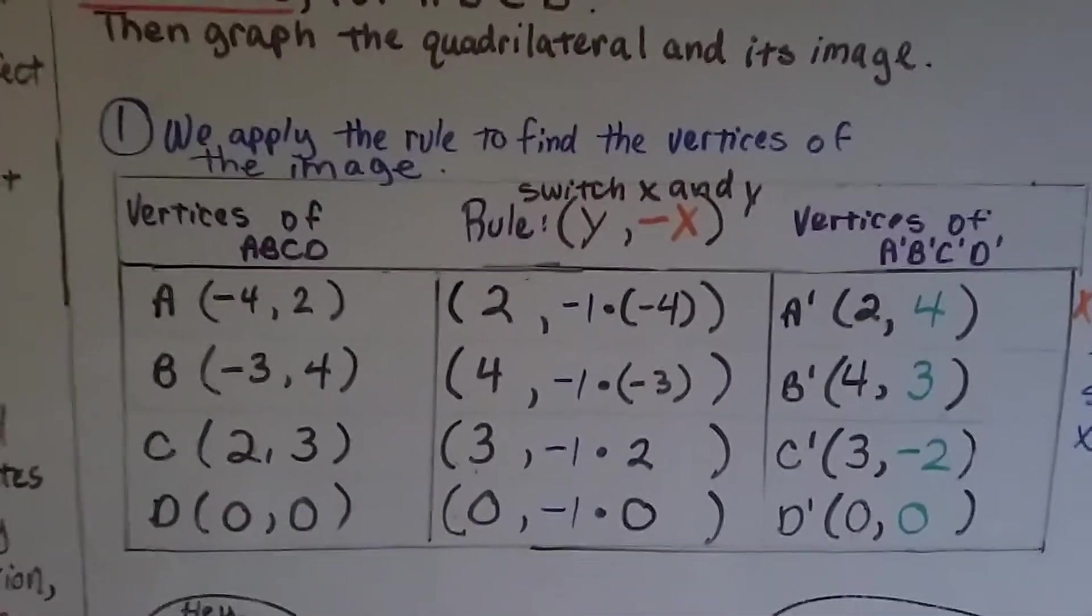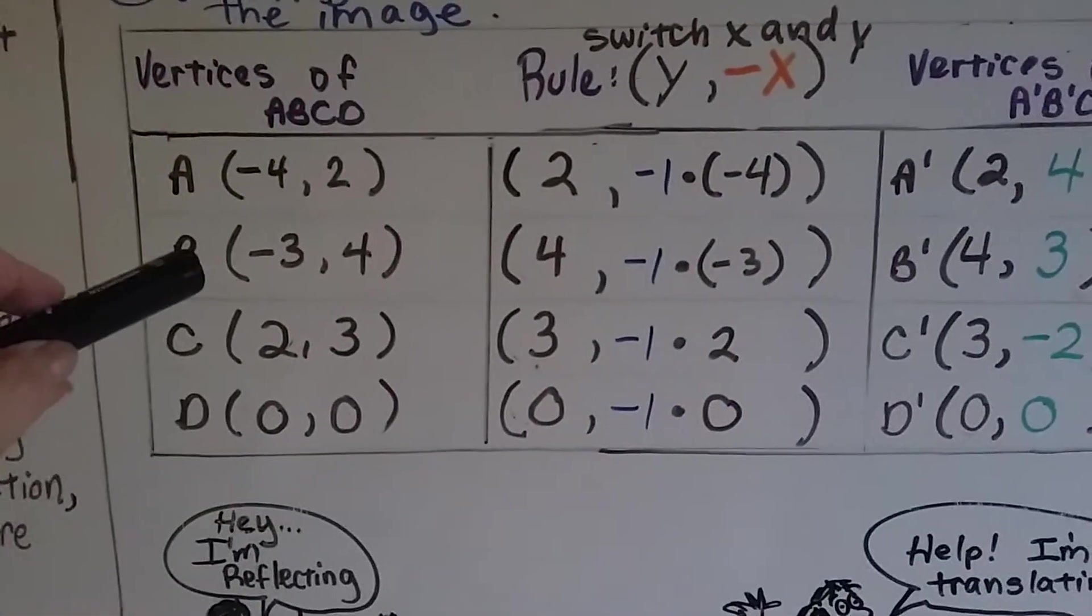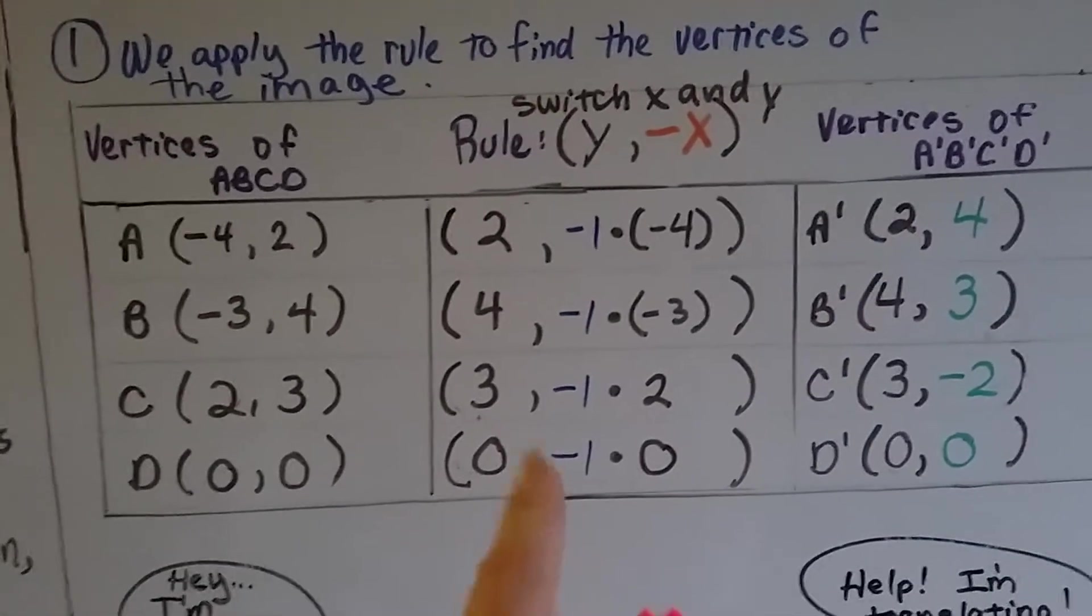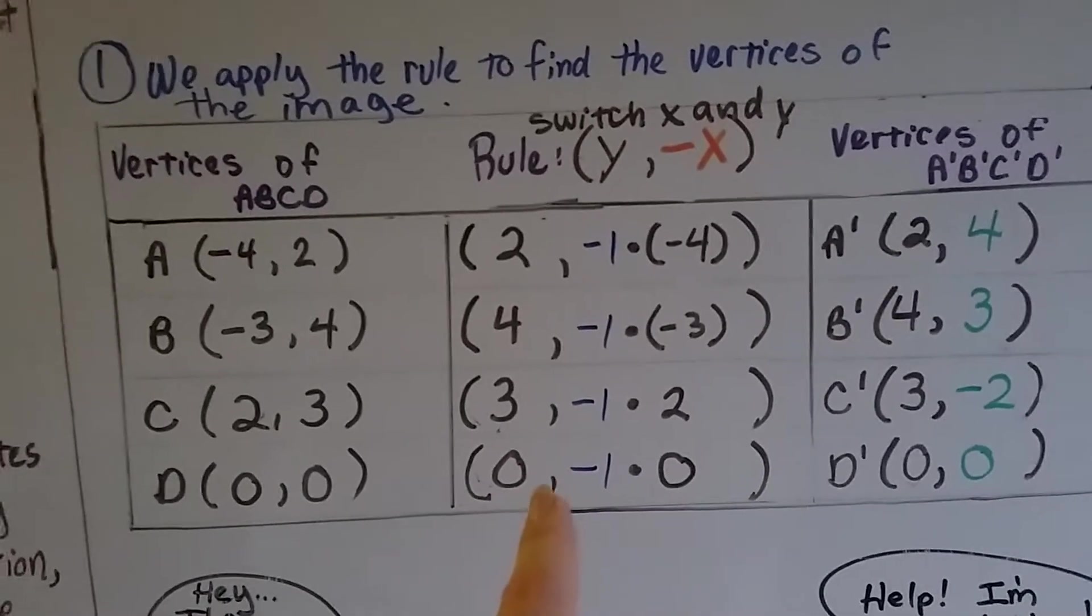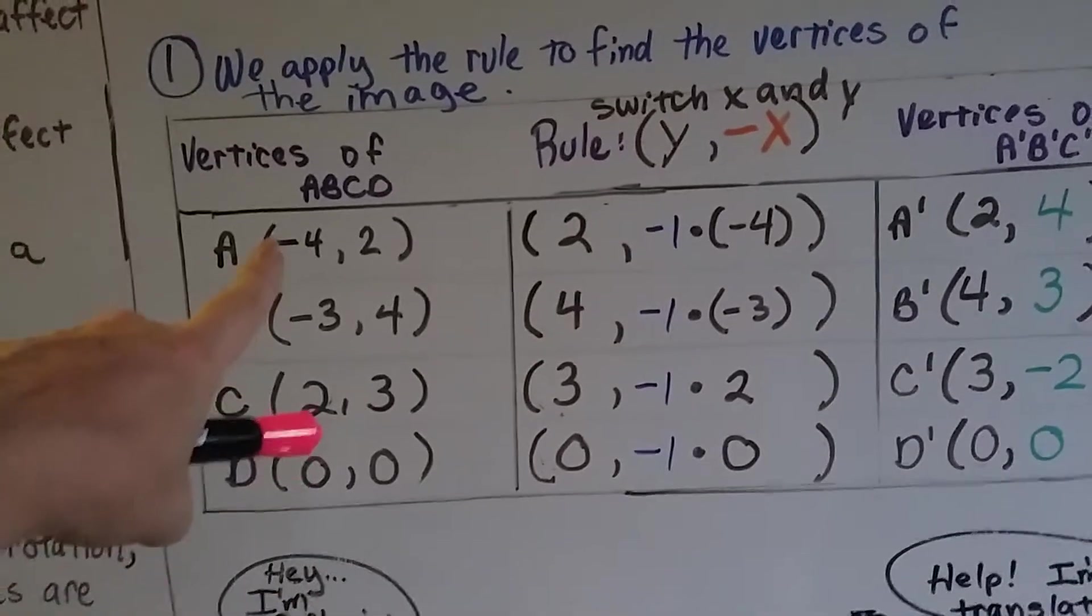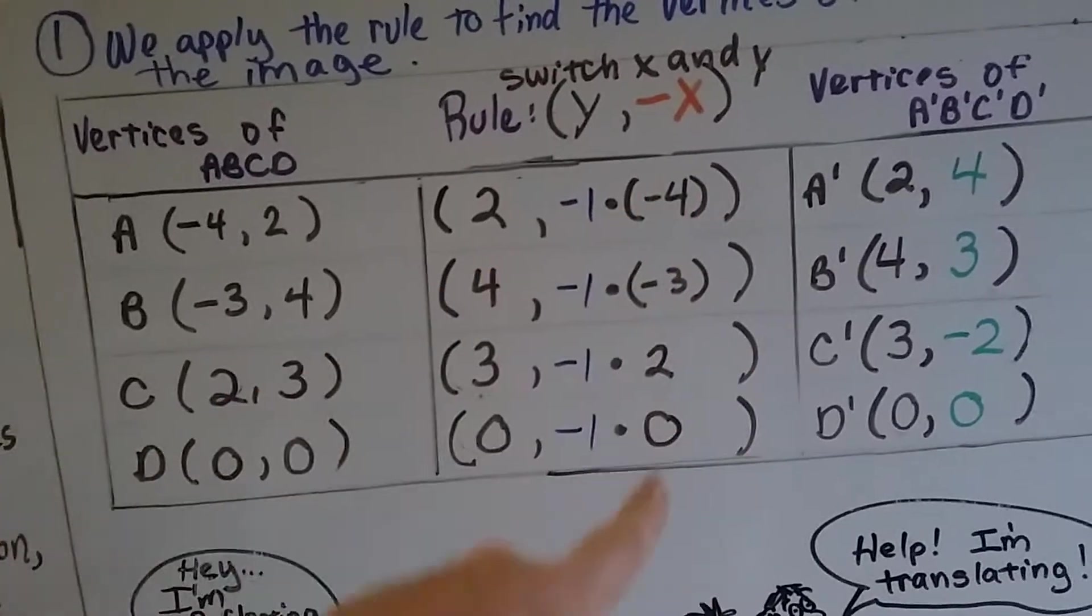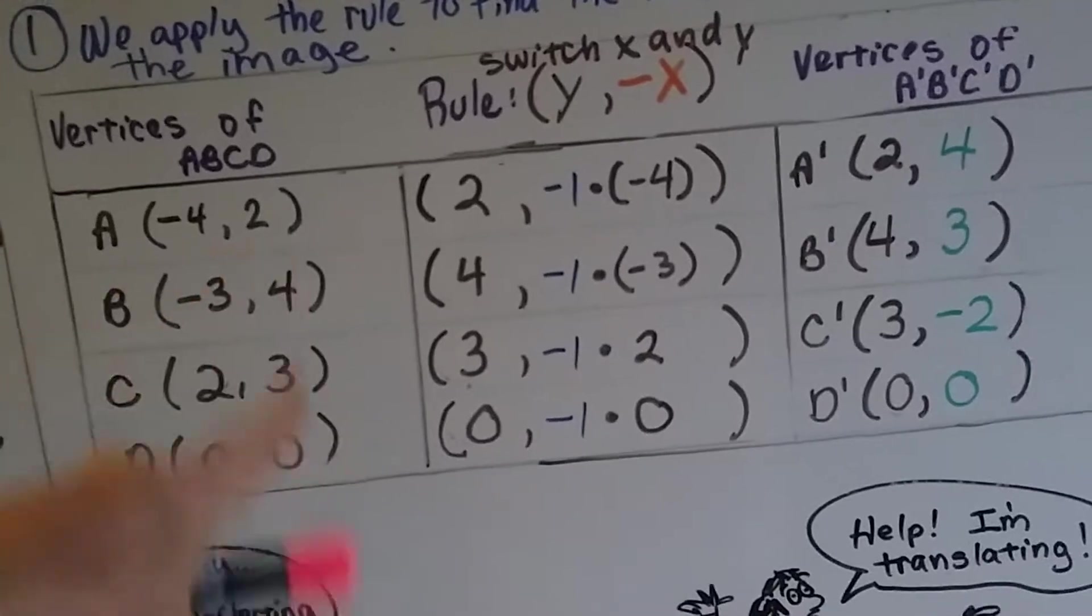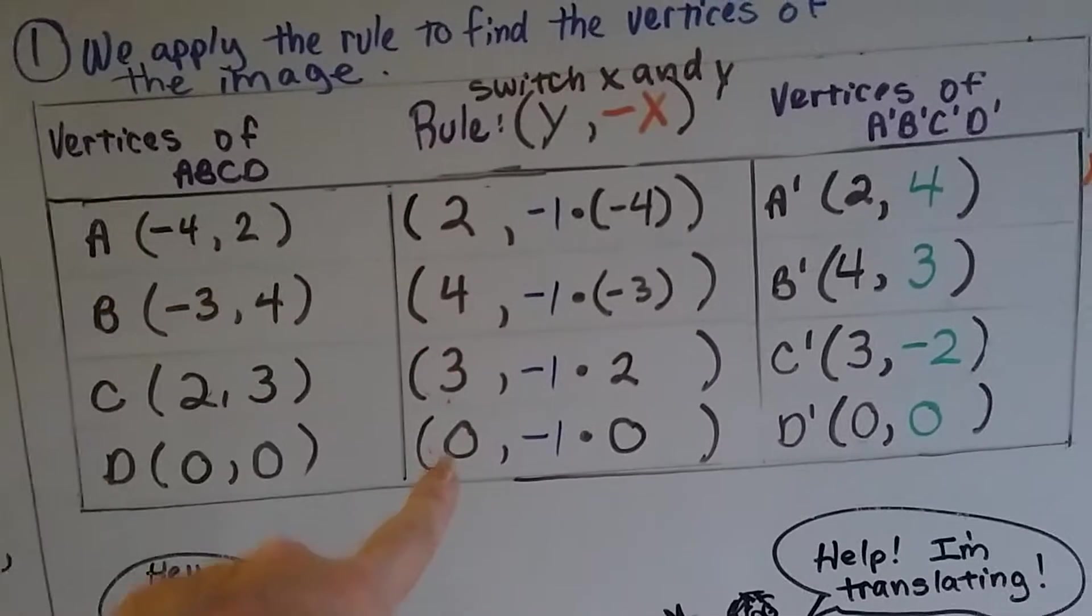So the first thing we do is apply the rule to find the vertices of the image. These were the vertices of A, B, C, and D, the x and the y values. The rule is to multiply the x-coordinate by negative 1 and then to switch the x and y values. So this is x: negative 4, negative 3, 2, and 0. They're the ones that are going to be multiplied by the negative 1. And 2, 4, 3, and 0 are the y values. They're switched—they switched places. Now these are where the x were.